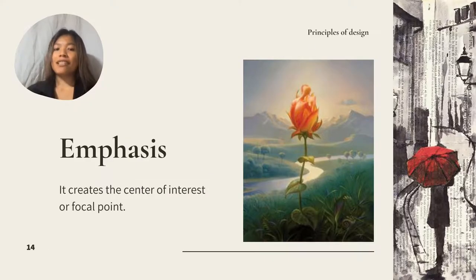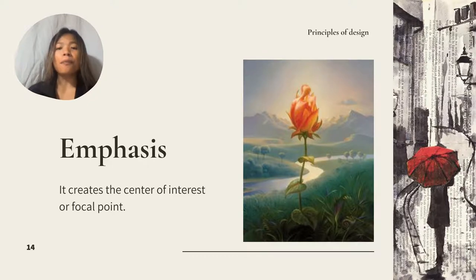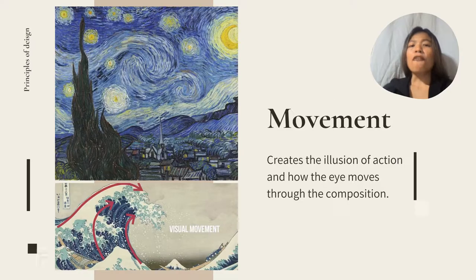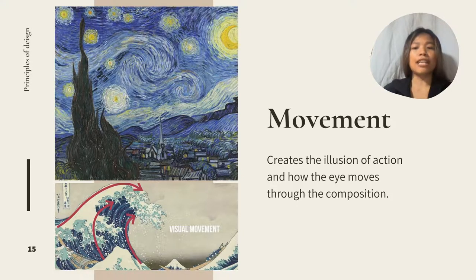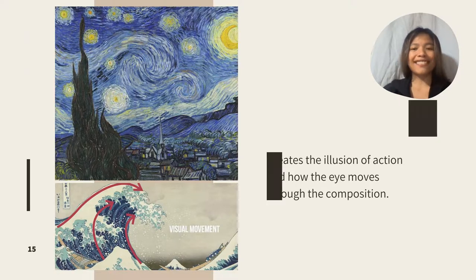Third is Emphasis. It is used to make certain parts of an artwork stand out. It creates the center of interest or focal point — the place to which an artist draws your eye first. Fourth is Movement. It is how the eye moves through the composition, leading the attention of the viewer from one aspect of the work to another. It can create the illusion of action.